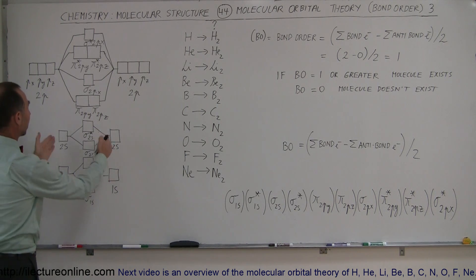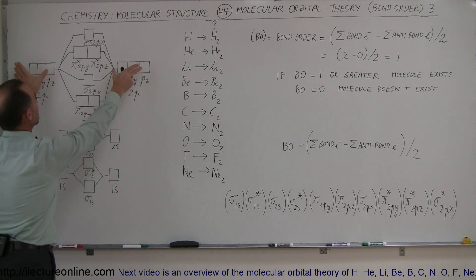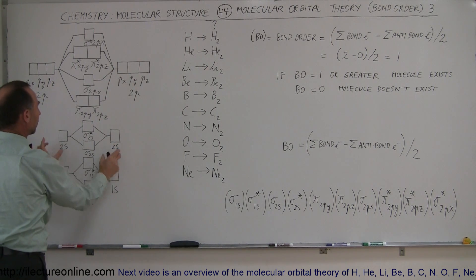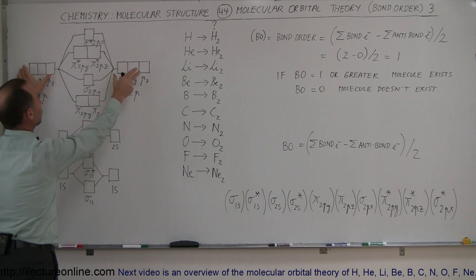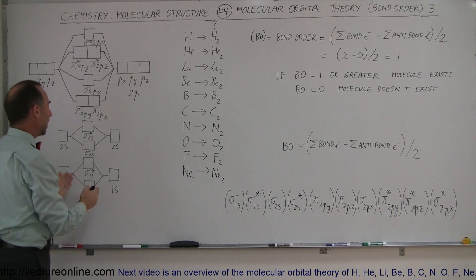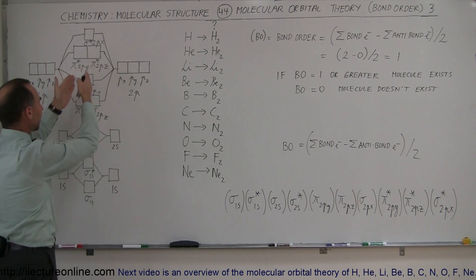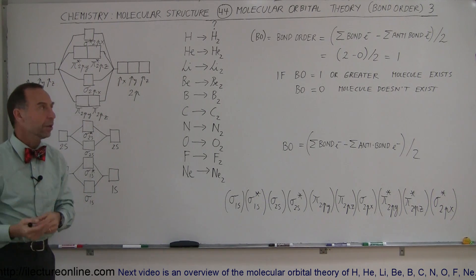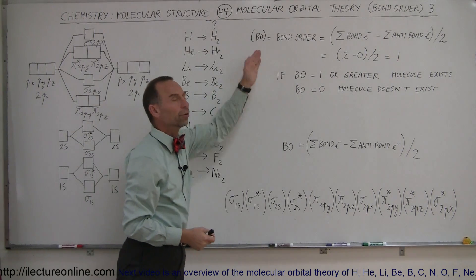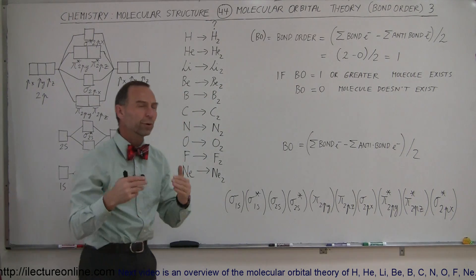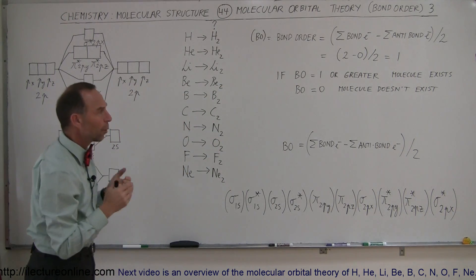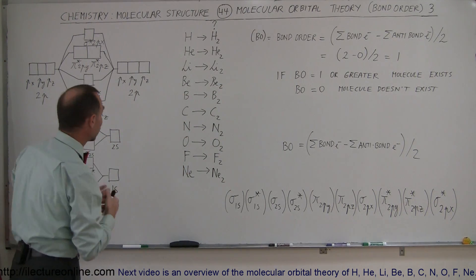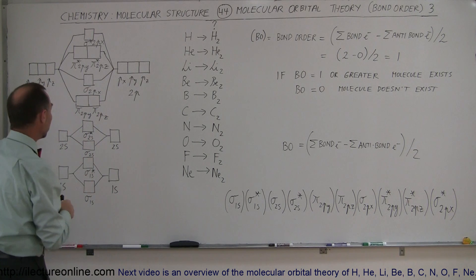We're going to put the electrons into the orbitals — the 1s, 2s, and 2p orbitals — and see what type of bonds form. Then, using the bond order equation, we'll figure out whether or not those molecules can exist. Starting out with hydrogen: